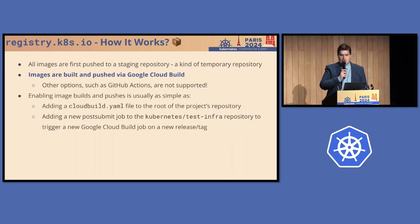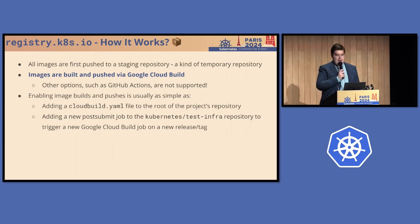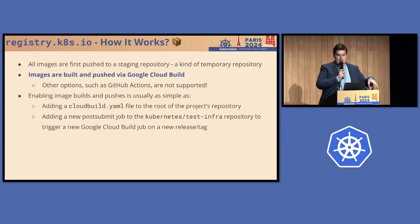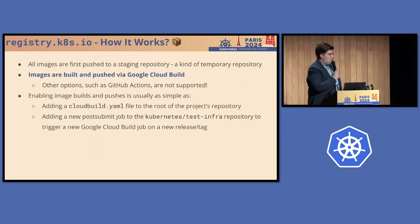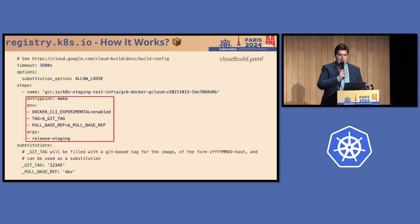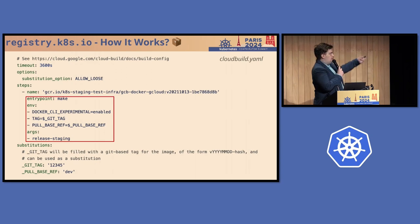For container images, you probably know about registry.k8s.io as the Kubernetes registry for all images. What's interesting is that it is in fact available to any subproject. You can just submit a request to get a repository there — this is the recommended way to host your images. You add a cloudbuild.yaml to the root of your project's repository, then add the post-submit jobs that will trigger Google Cloud Build when you do a release. Images are first published to a staging repository, then built and published via Google Cloud Build — that's the only way to do it.